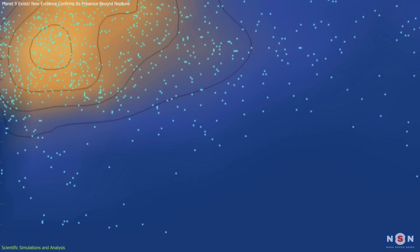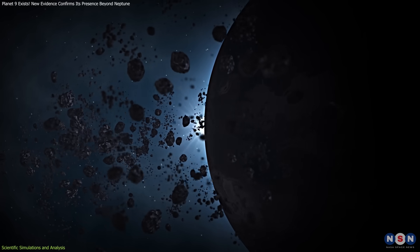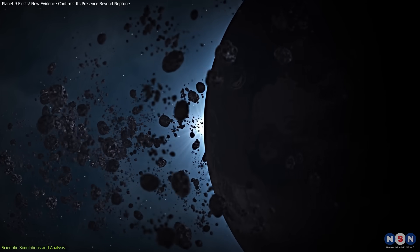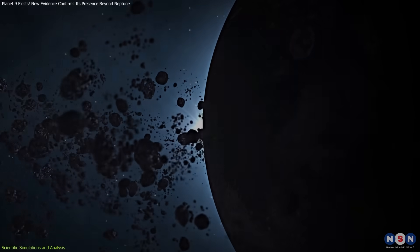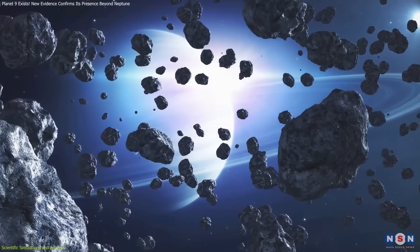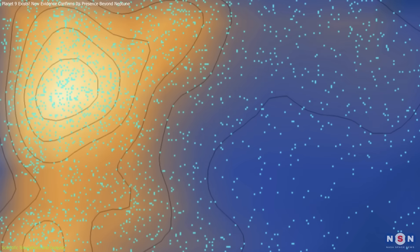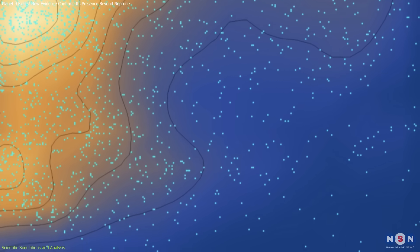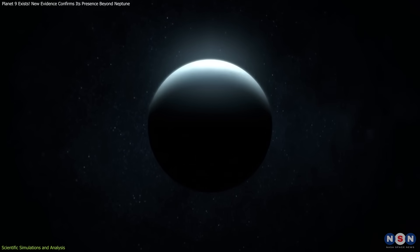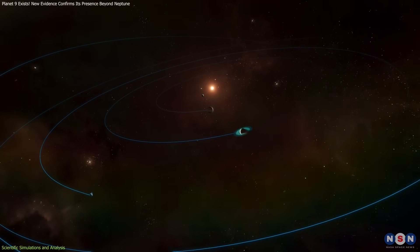Then they added Planet Nine to the equation. In this model, a planet with about five times the mass of Earth exerts its gravitational influence on the TNOs, causing them to be slingshotted past Neptune. The result? The simulated orbits matched the real-life orbits of the TNOs almost perfectly. This provided the strongest statistical evidence yet that Planet Nine is out there, hiding in the depths of the solar system.